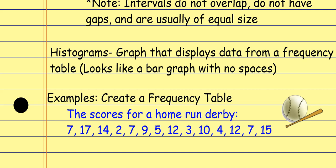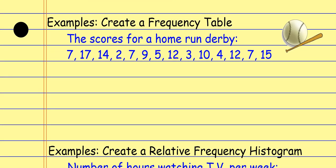For the first example, to create a frequency table I have to decide on an interval. I look for the range: the smallest data value is 2 and the biggest is 17. Subtracting gives a range of 15, but that actually means 16 data values if you count from 2 to 17. The general rule is we want around 4 to 6 groups. Since there are 16 data values, 4 is a good interval because it gives me 4 groups.